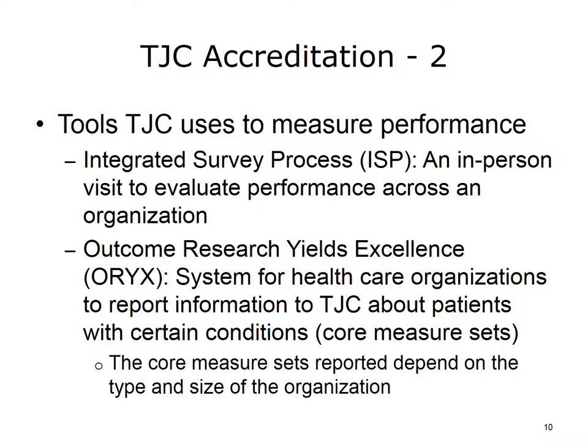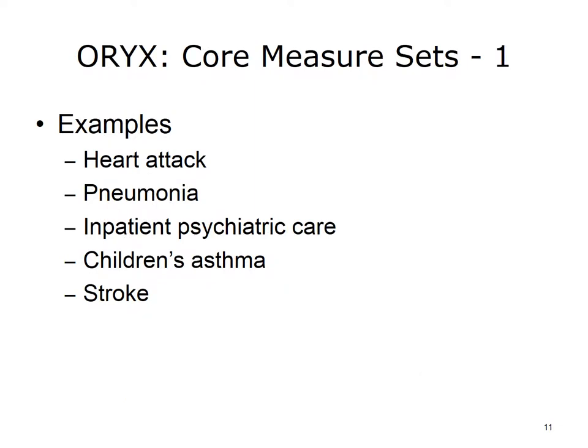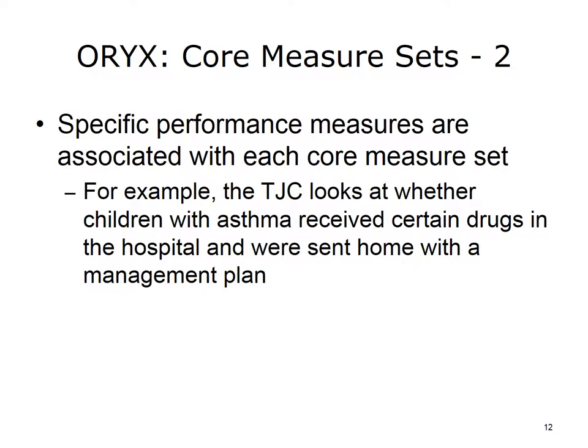ORYX is directly relevant to information technology professionals. Hospitals are required to collect and transmit data to TJC about patients with certain conditions. Treatments for these conditions are considered core measures of the organization's performance. A hospital might report on conditions such as heart attack or acute myocardial infarction, pneumonia, psychiatric care, children's asthma, or stroke. For each condition, TJC requires the hospital to report on certain performance measures. For example, if a child is treated for asthma, the hospital must report whether certain drugs were given and whether the child was sent home with a management plan.